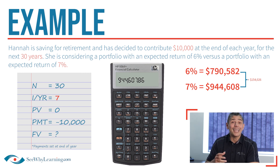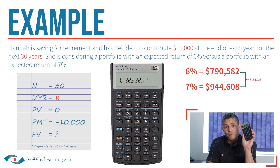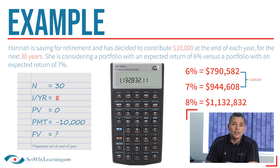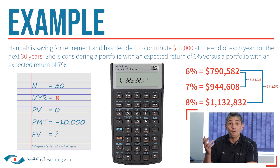So just for fun, I'm going to plug in 8% and see how that would impact the answer. 8, I/YR, FV — and we get an answer of approximately $1,132,832. In this scenario, we can see that an extra 2% return would generate approximately an additional $342,250 over 30 years.